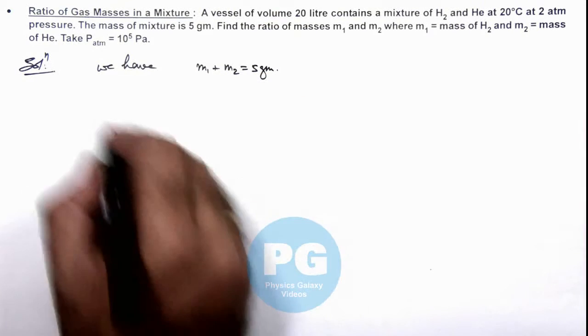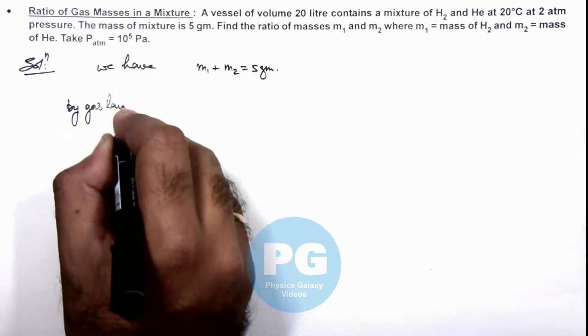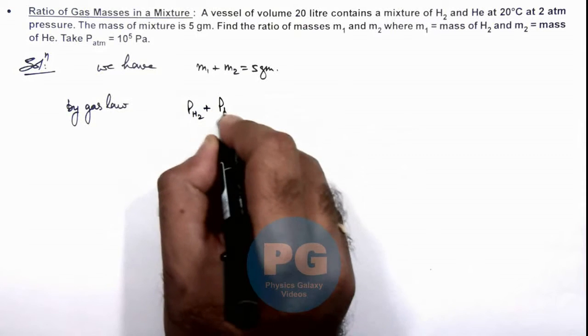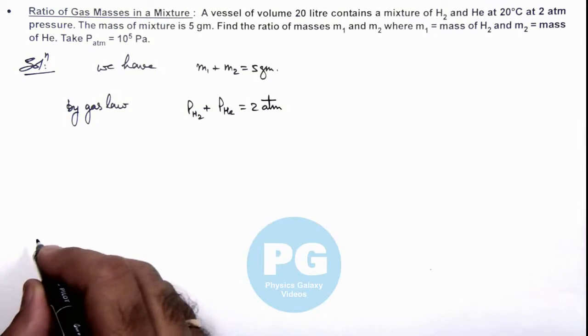And we know by gas law, if we use Dalton's law we can write: pressure of hydrogen plus pressure of helium is equal to 2 atmosphere.